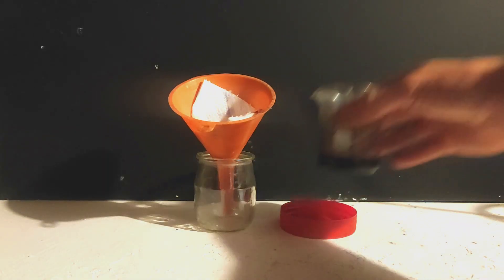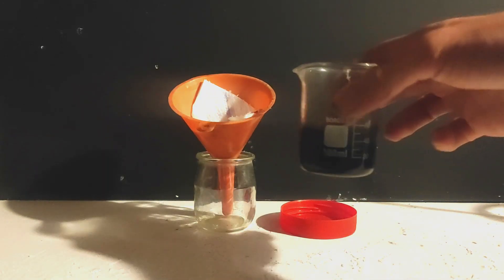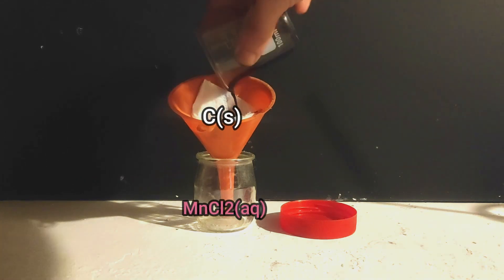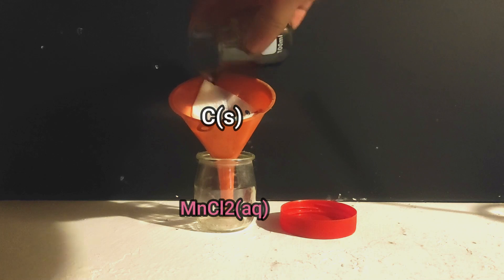When this is done, we can filter everything and all the carbon should be left inside the filter, whereas our manganese chloride is soluble in water and passes through it.